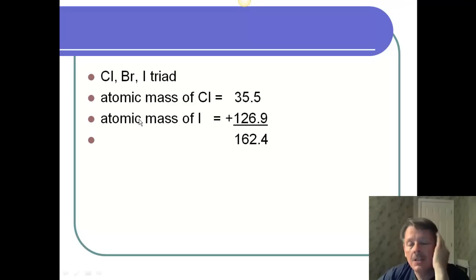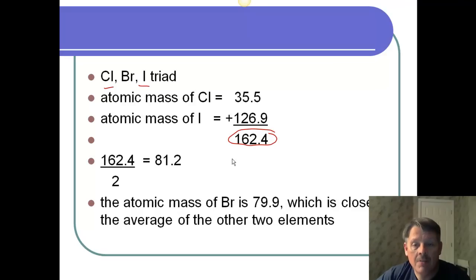So, if we take the chlorine-bromine-iodine triad, and you look at the two ends, the chlorine and iodine, add them together, you get 162.4. Now, if you divide that by two, you get the average, and the average is 81.2, which is real close to the average atomic mass of bromine. So, you're able to say it's pretty close. Is it exact? No, but it's pretty close.